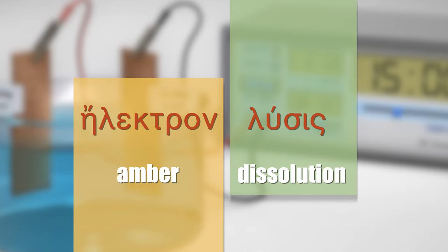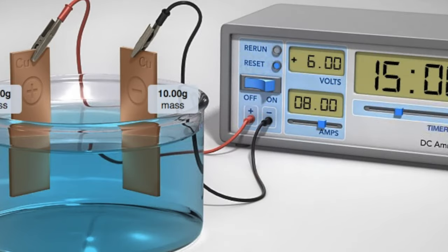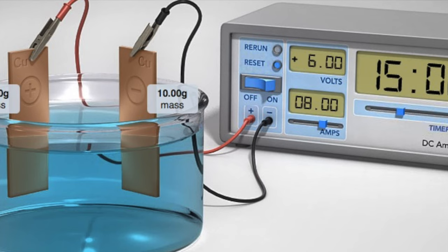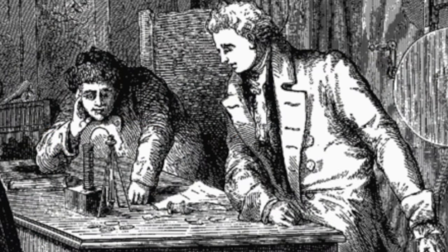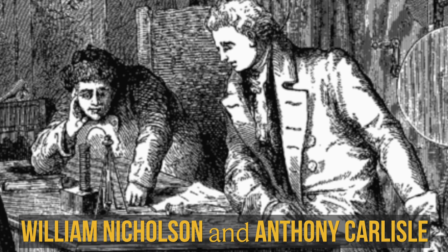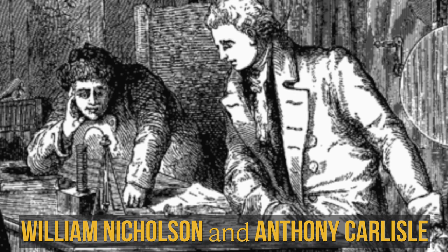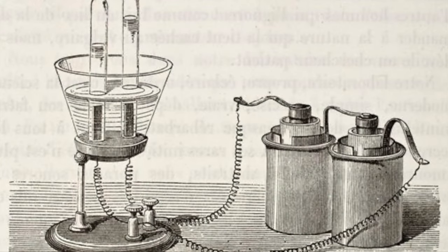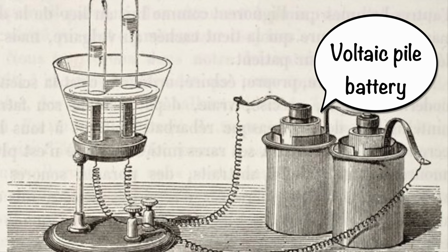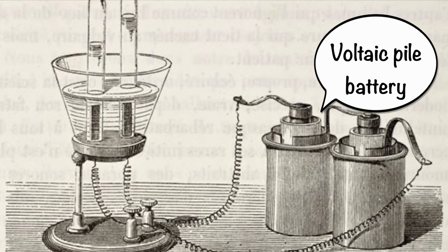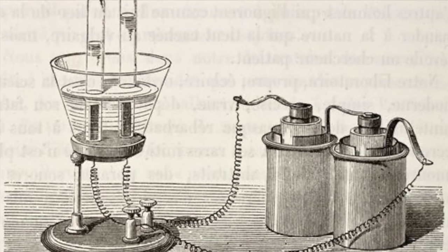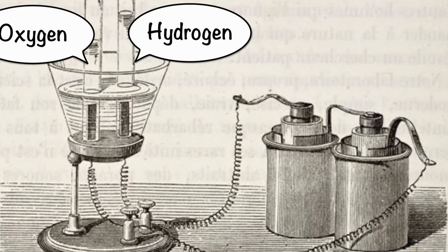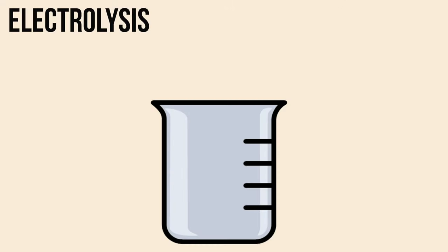Perhaps the most familiar example of electrolysis is the decomposition of water into hydrogen and oxygen by means of an electric current. First electrolysis was performed by William Nicholson and Anthony Carlyle in 1800. Using Alessandro Volta's recently invented voltaic pile battery, they immersed two electrodes into water and allowed electricity to flow. This caused the water to break down into its two components, hydrogen and oxygen. So, how does electrolysis work?